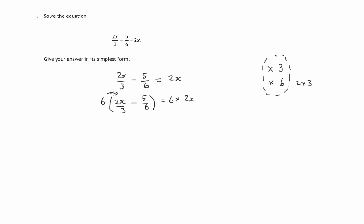Now both terms here get multiplied by 6. So we have 6 times 2x over 3 minus 6 times 5 over 6 and that equals 6 times 2x, 12x.